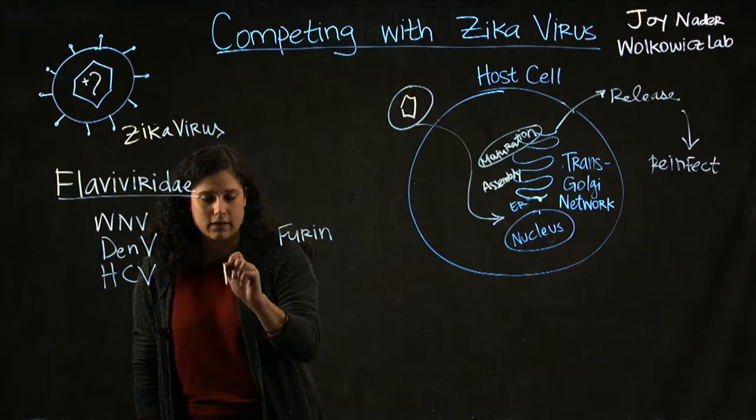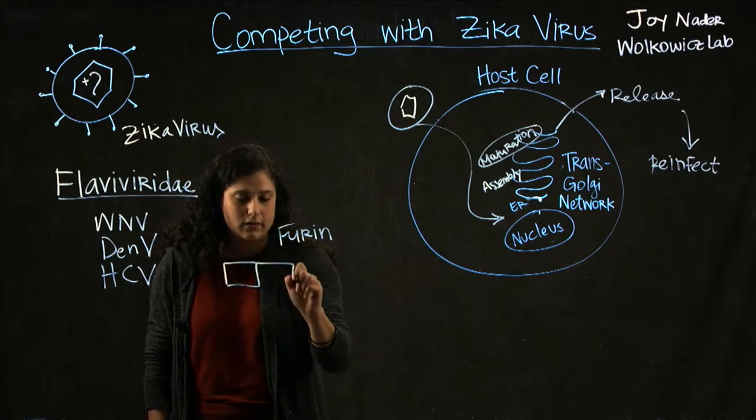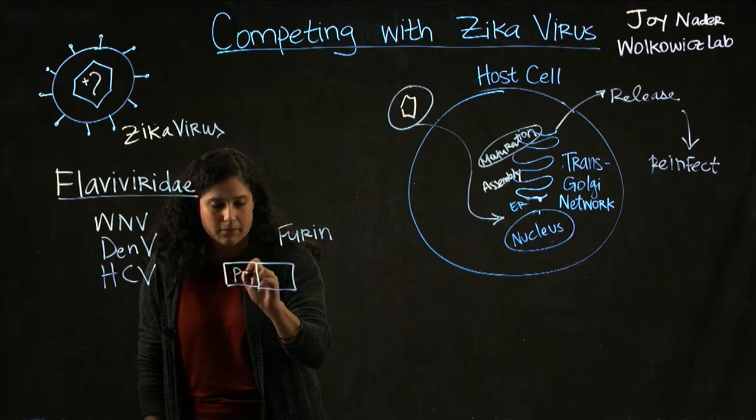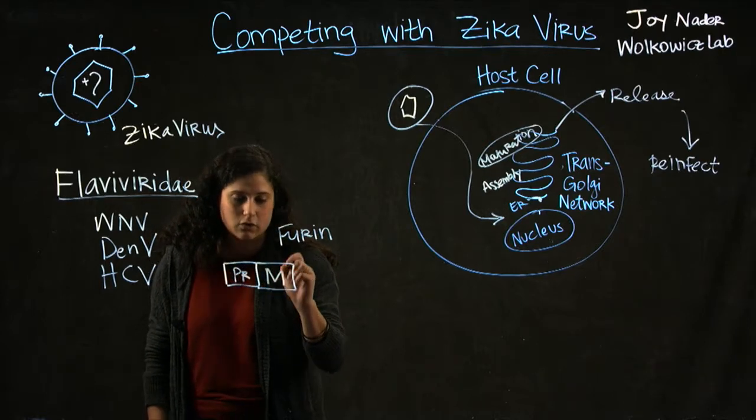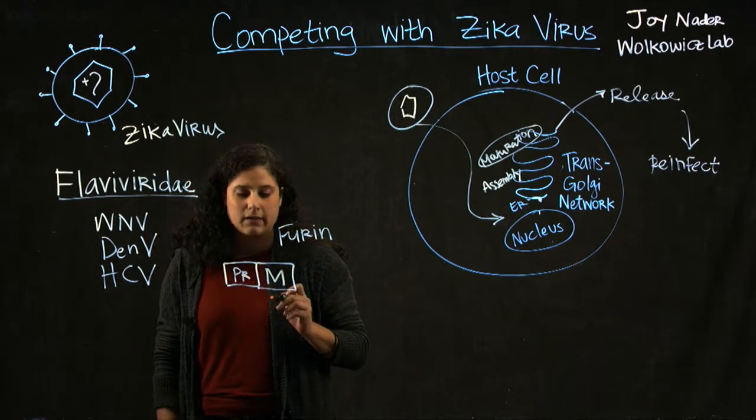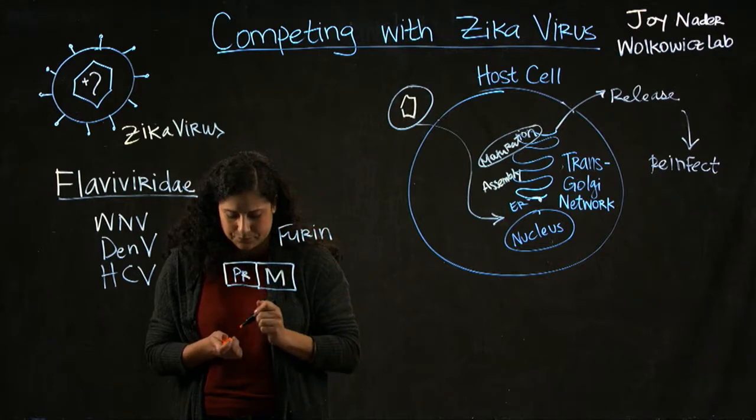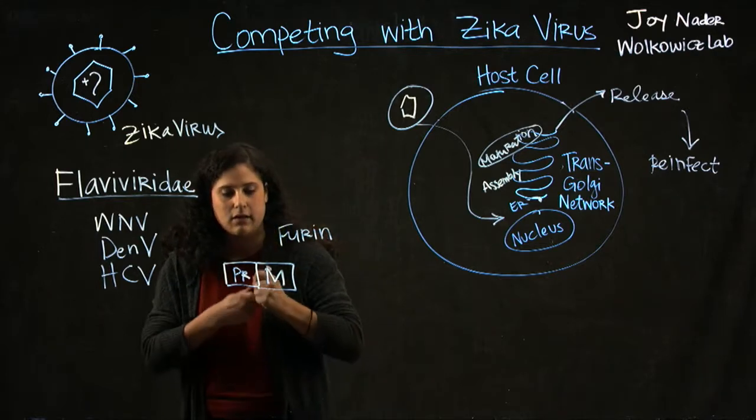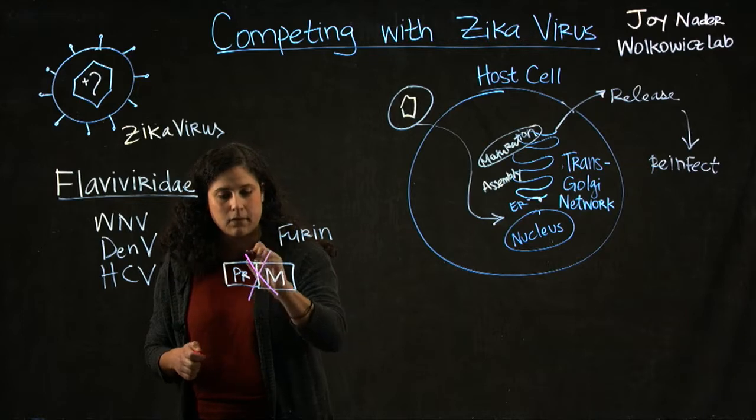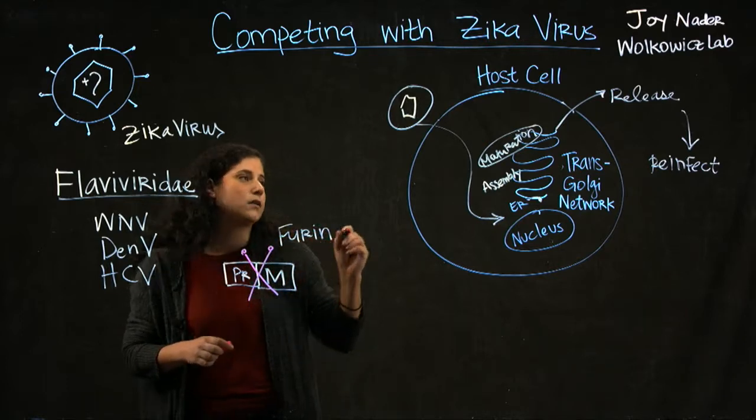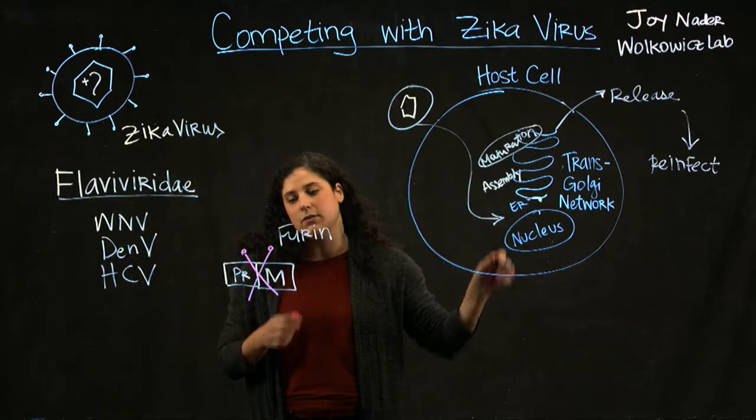Its interaction with Zika involves cleaving the pre-membrane complex, which is part of the viral structural proteins. When Furin comes in and cuts the PRM, the virus can then mature, be released, and reinfect.